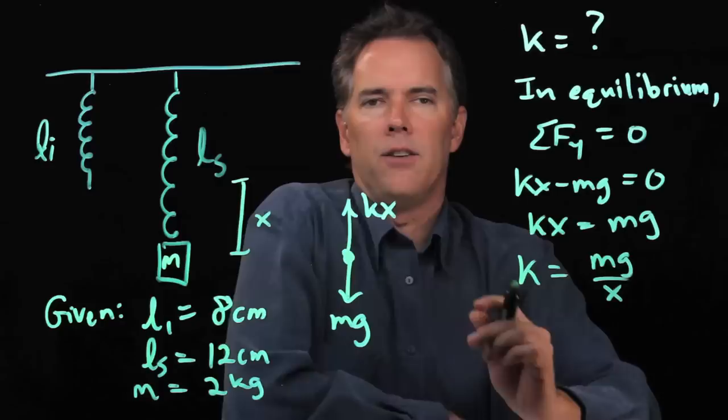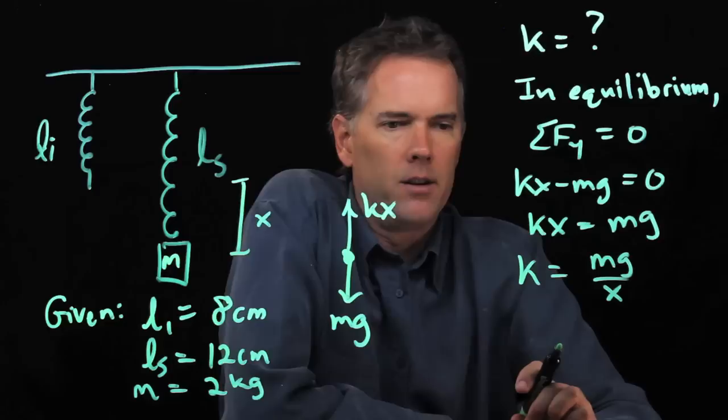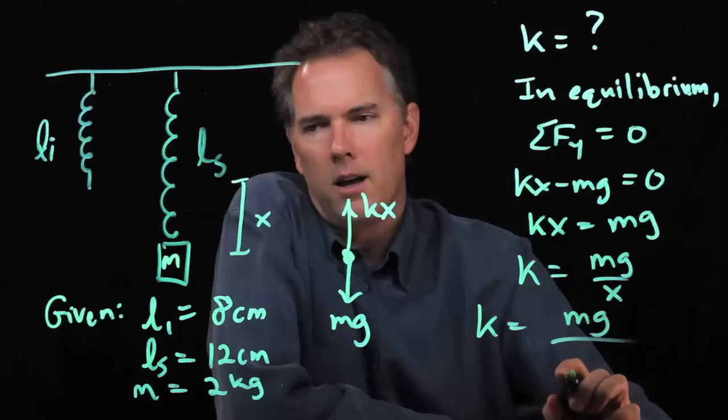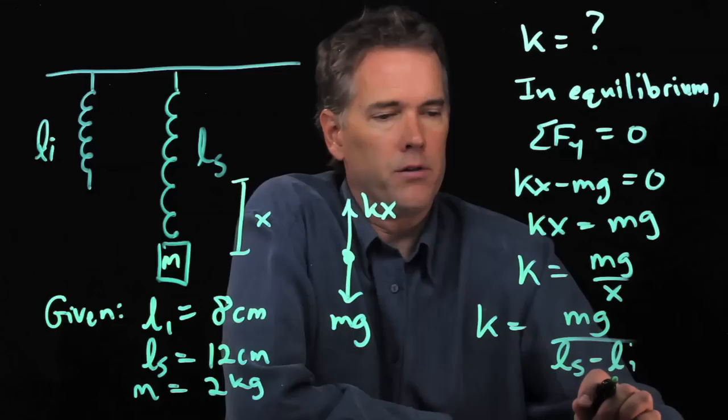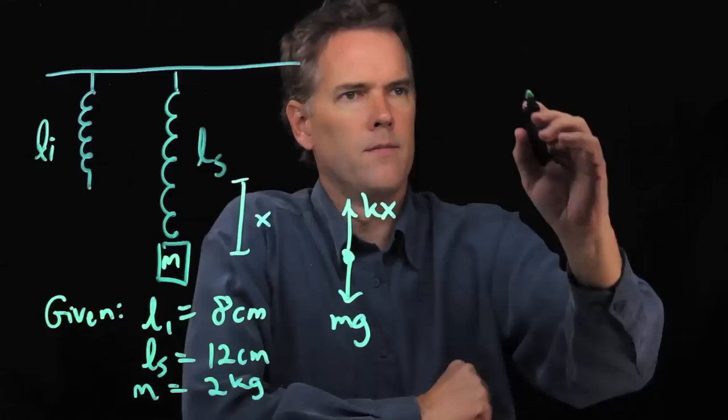Do we have all those numbers? Well not quite, because x is really this distance here—it's the difference between the stretched length and the rest length Li. So we have to be careful. X is really L stretch minus Li, and now it seems we have all those numbers, so we can plug them in and try it out.